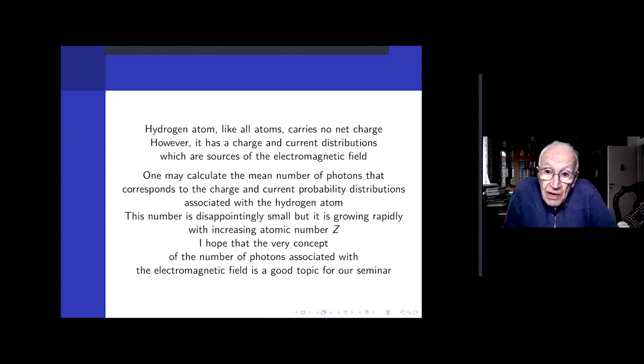It has some charge distribution because the proton is very small inside and the electron has a wave function which extends roughly around the Bohr radius. One may calculate the mean number of photons that corresponds to the charge and current probability distributions. It will be the average number of photons because it is based on probabilistic interpretation of quantum mechanics. The number is disappointingly small but growing with Z, and there are other issues here which might be of interest.